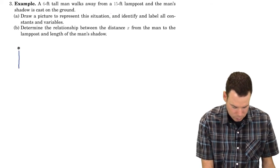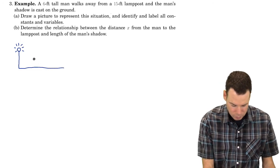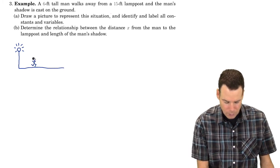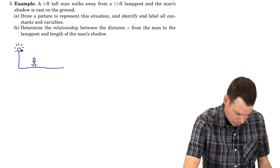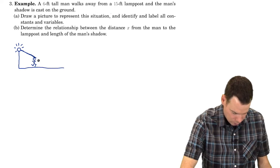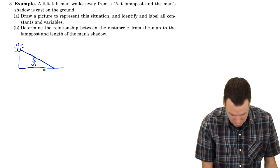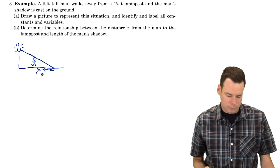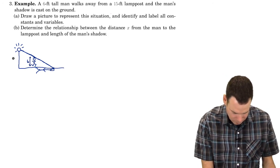Here's our lamp post, and we've got a man walking away from it. There's a shadow cast on the ground. The beam of light that just clips the top of the man's head is going to define the shadow. So here's our full shadow. We know the man is 6 feet tall — that distance is 6 — and the lamp post is 15 feet tall.